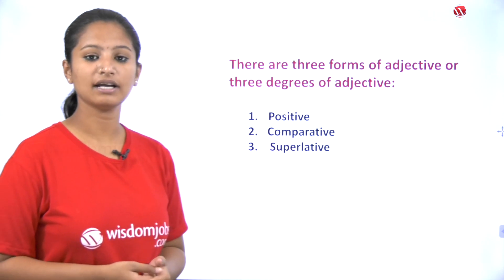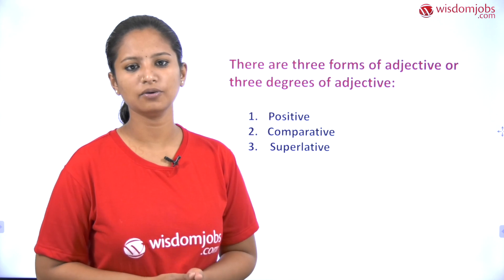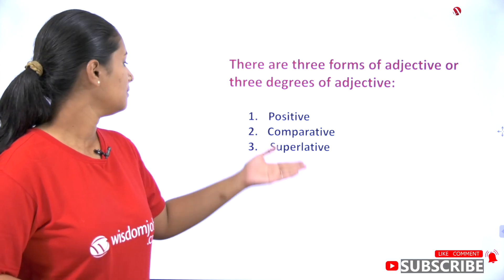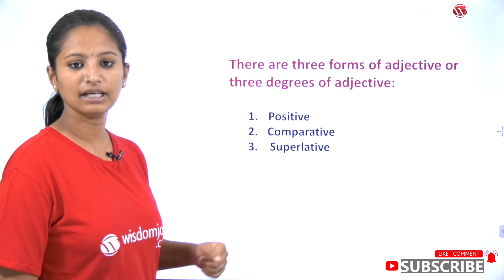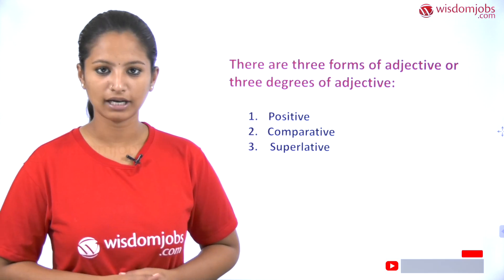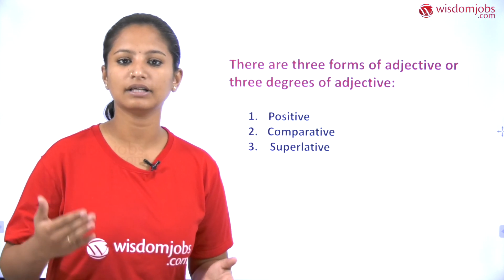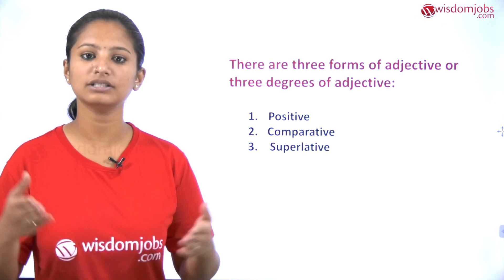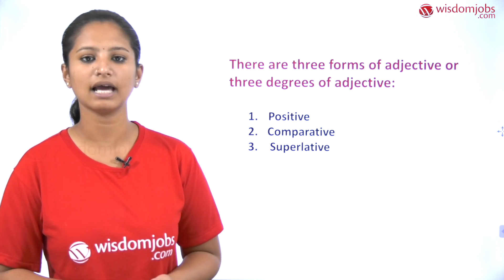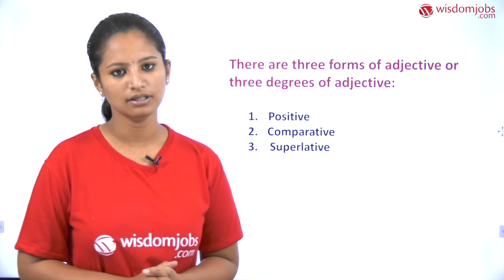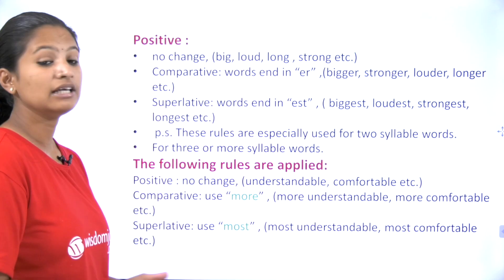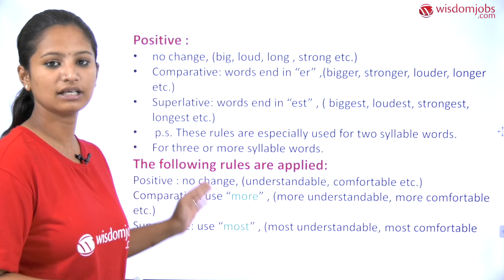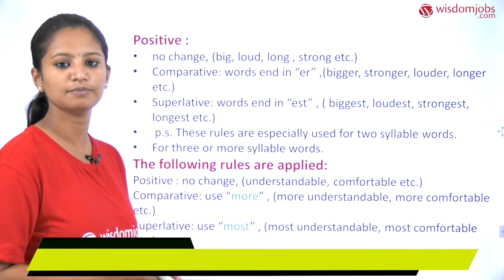Basically, adjectives are divided into three forms, popularly known as three degrees: positive degree, comparative degree, and superlative degree. Let us see these three degrees and how they affect the formation of words or sentences, and how they are used in English grammar. Let us begin with the positive degree.